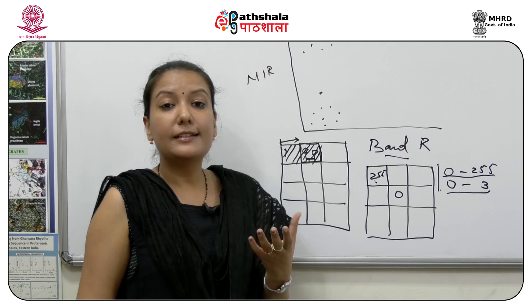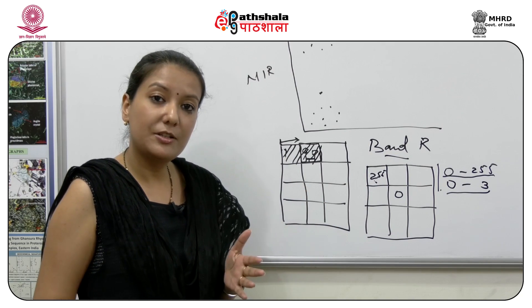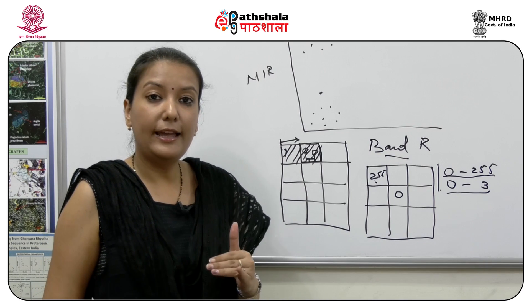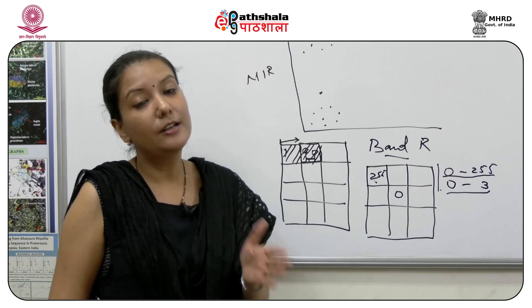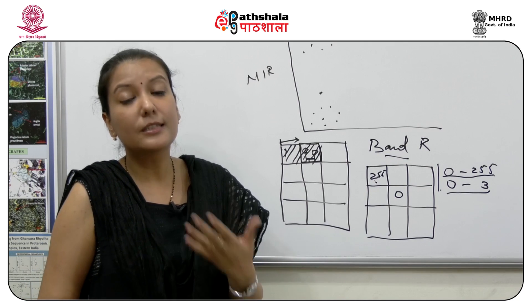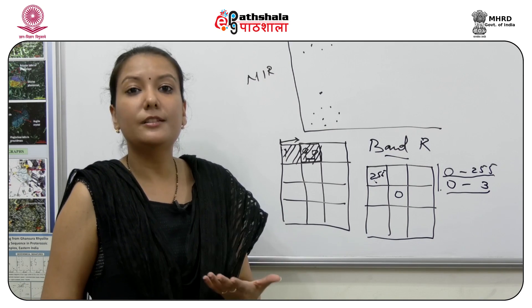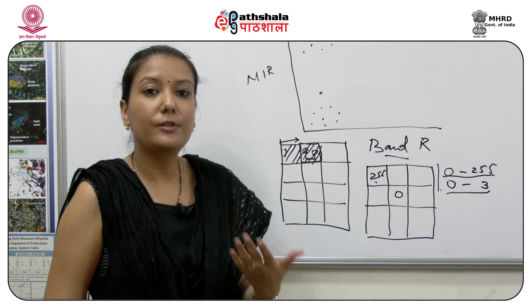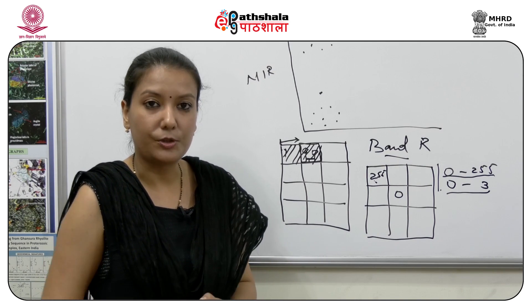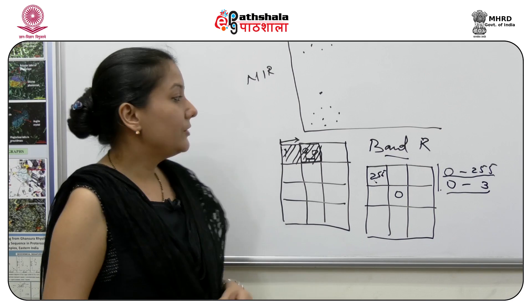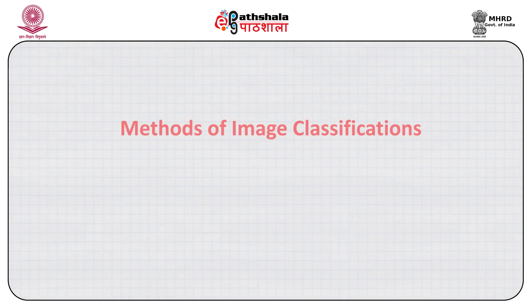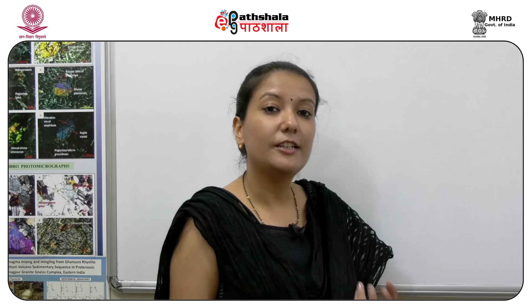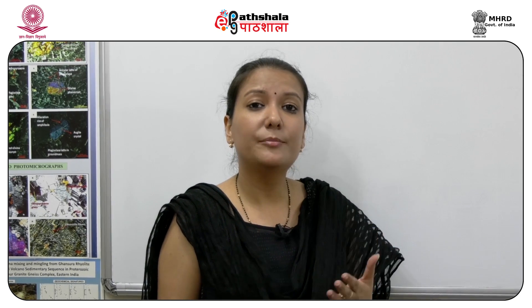For example, Landsat 7 has a 30-meter spatial resolution and an 8-bit image resolution, while Landsat 8 has increased it to 16-bit resolution. Depending on your requirements you can decide which image to use. On the basis of this we classify our image. Now, there are basically three categories of methods which can be utilized for classifying an image.